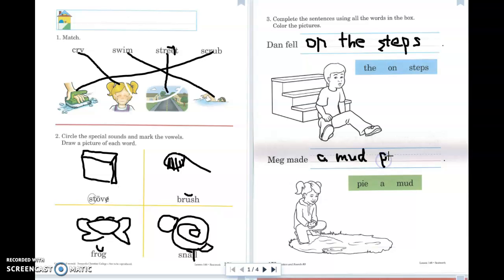I think that sounds like a great sentence. And that's what our friend Meg is doing. She is making a mud pie. Meg made a mud pie. That's all you need to do. If you want to color the pictures, you may color the pictures.